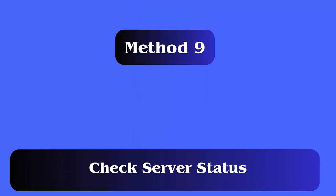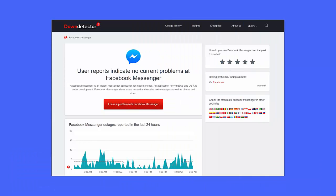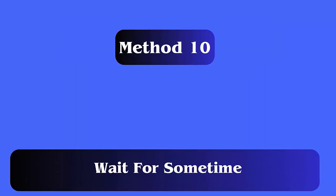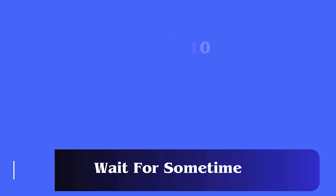Method 9: Check server status. You should also check if there is any server downtime. In many cases, the server does not respond due to maintenance, and so the app stops functioning. You should check the current status via the Down Detector website.